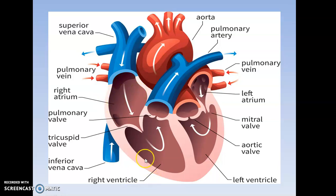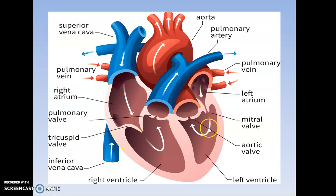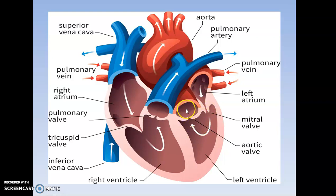Here is the right atrium and right ventricle. Here is the wall that is called the tricuspid valve. This is the left atrium and left ventricle, and there is the wall that is called the mitral valve. From the left ventricle, oxygenated blood goes into the aorta, and from the aorta it is supplied to the whole body.